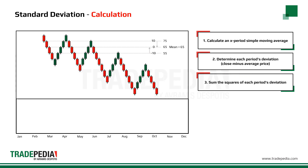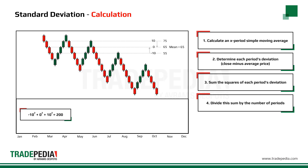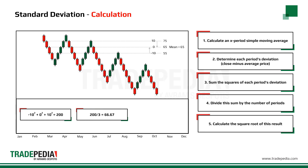Next, we sum the squares of each period's deviation: negative 10 squared plus 0 squared plus 10 squared equals 200. Divide this sum by the number of periods used — in our case, 200 divided by 3. Finally, we calculate the square root of this result and we get 8.16 as the standard deviation.